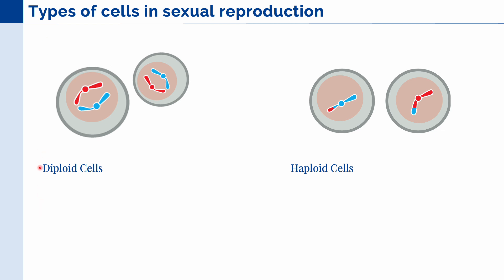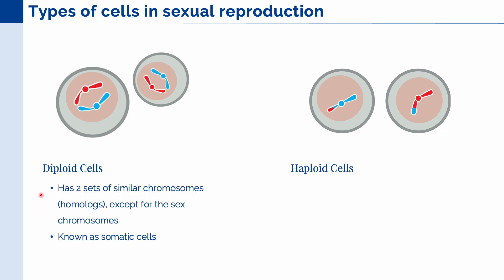The first are called diploid cells. These cells have two sets of similar chromosomes called homologues. The homologues are functionally the same, but may have some slight differences in their nucleotide sequence. In diploid cells, all the chromosomes are homologues except for the sex chromosomes. In humans, our sex chromosomes are called X and Y. These types of cells are also known as somatic cells, and they are used to support the haploid cells, or gametes.